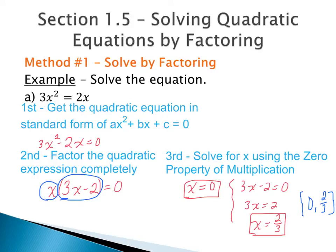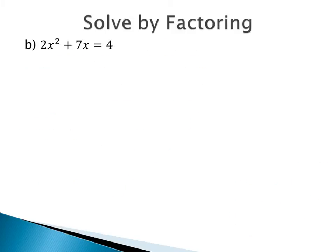Using our zero property, plugging in zero for x gives us zero times a real number equals zero, and plugging in 2 thirds gives us a real number times zero equals zero. Now we'll do another example of solving by factoring. First, we need to get the equation into standard form by moving the 4 over, so that we have 2x squared plus 7x minus 4 equals zero.